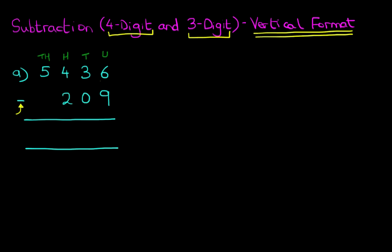As always, we start on the right-hand side first. We've got six minus nine. Now, six minus nine is something we cannot do because six is smaller than nine. We're going to take one from the column to the left — the tens column. So let's cross out the three. Three minus one is two, and the one we have taken from there we're going to move to the units column. So the units is now 16 minus nine. 16 minus nine is seven.